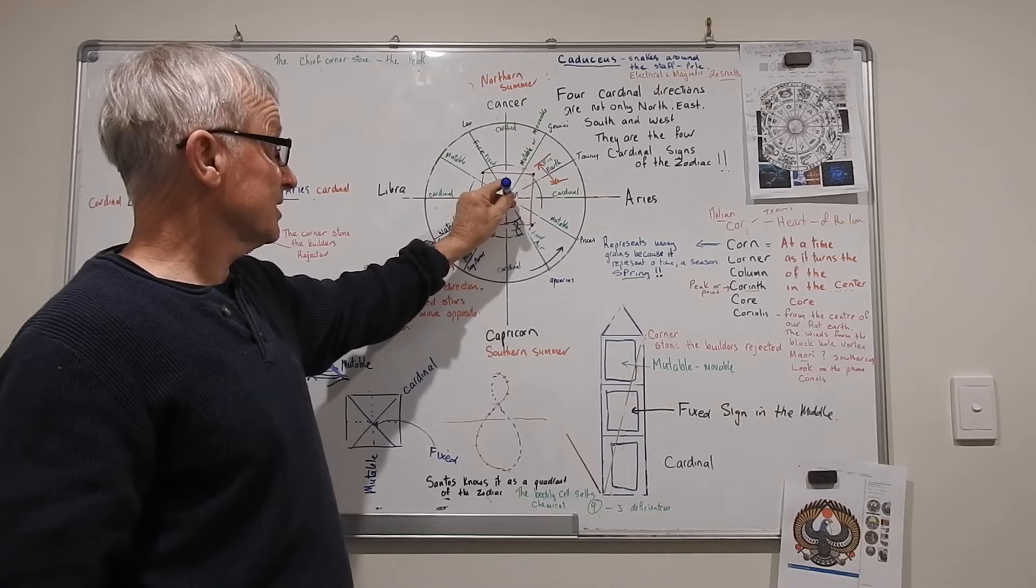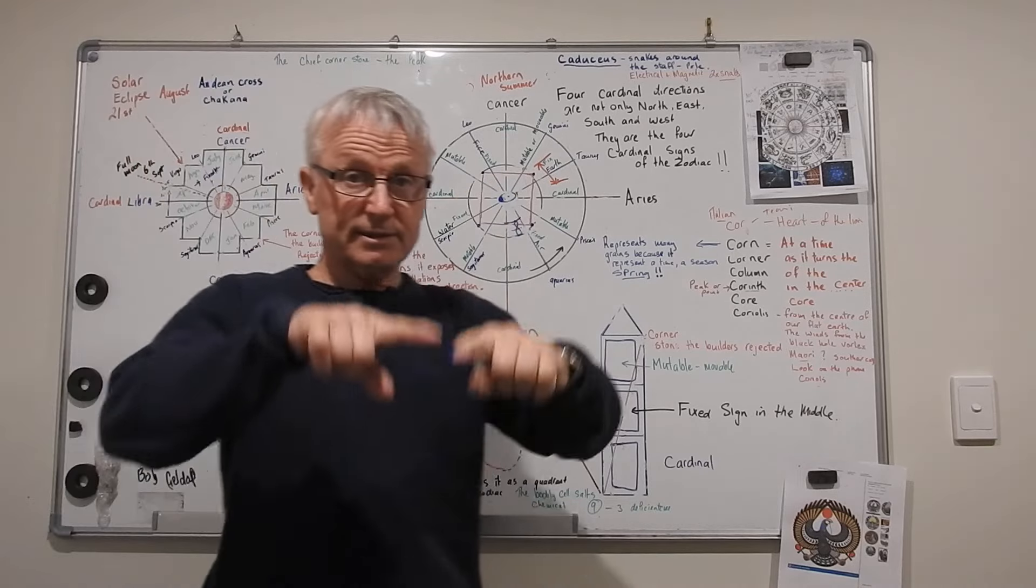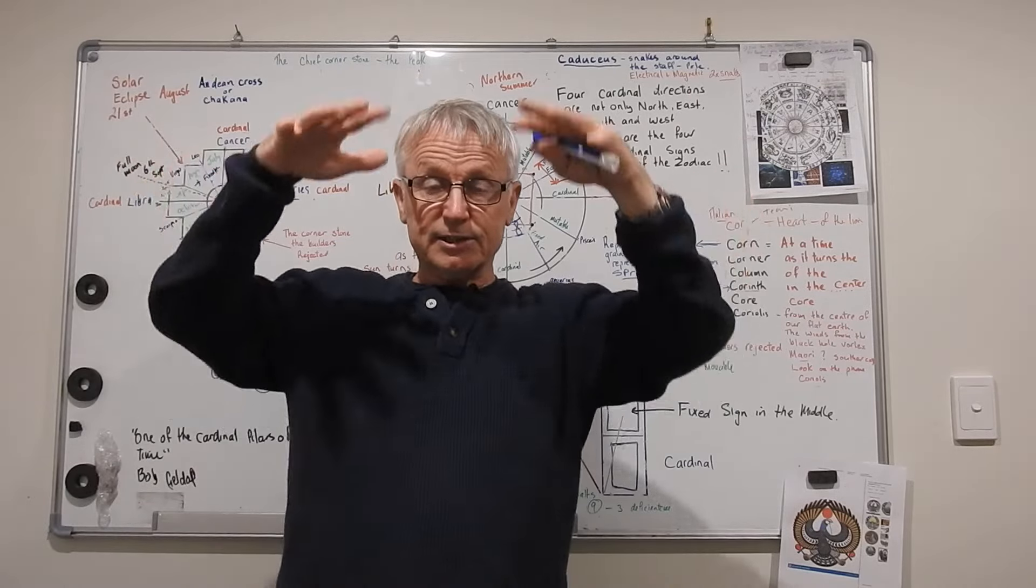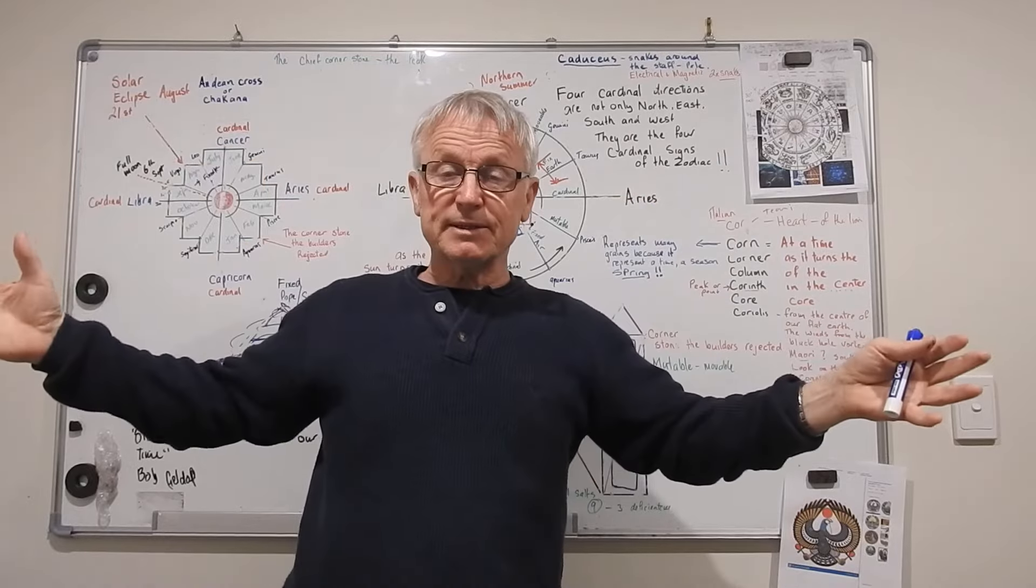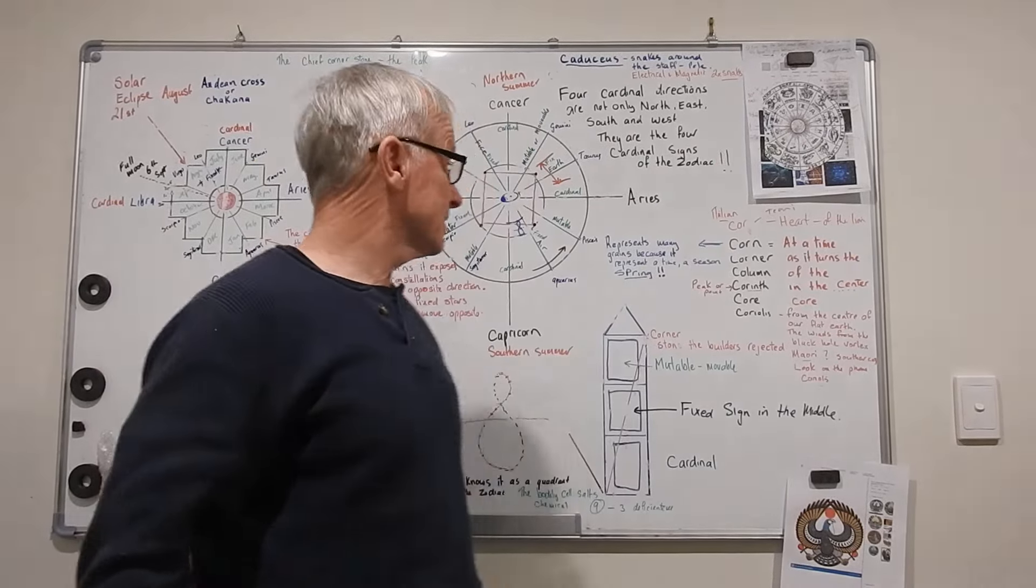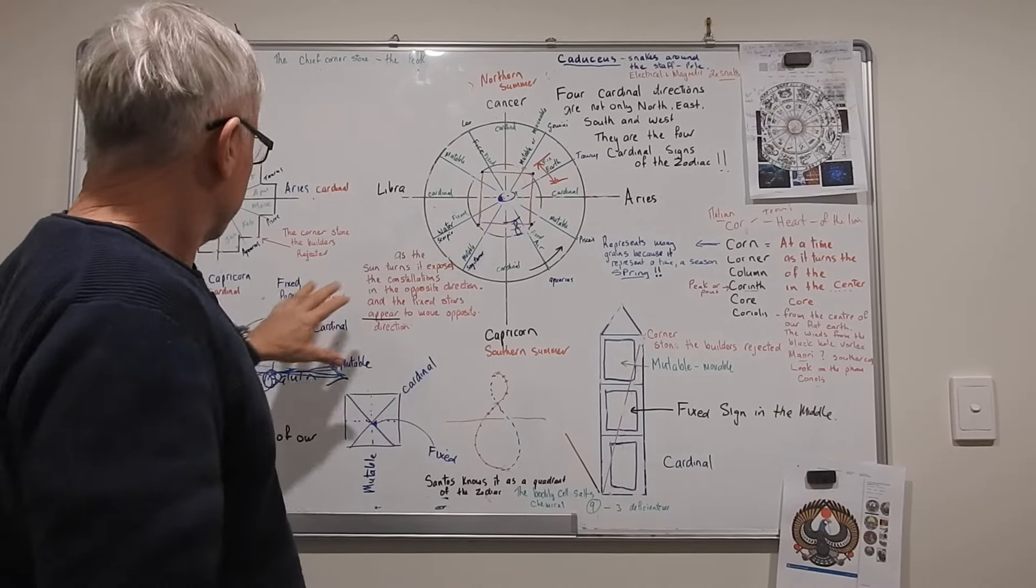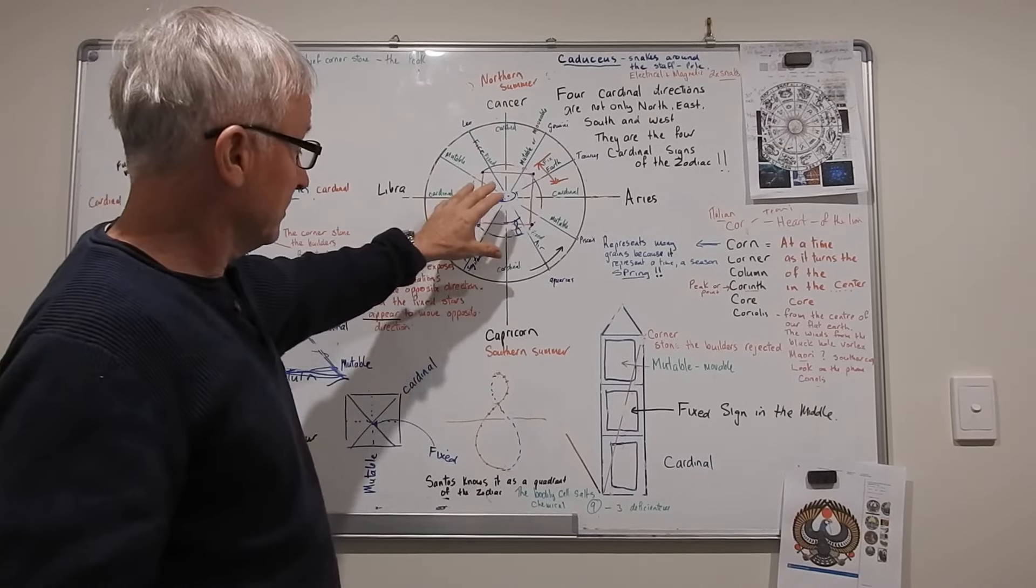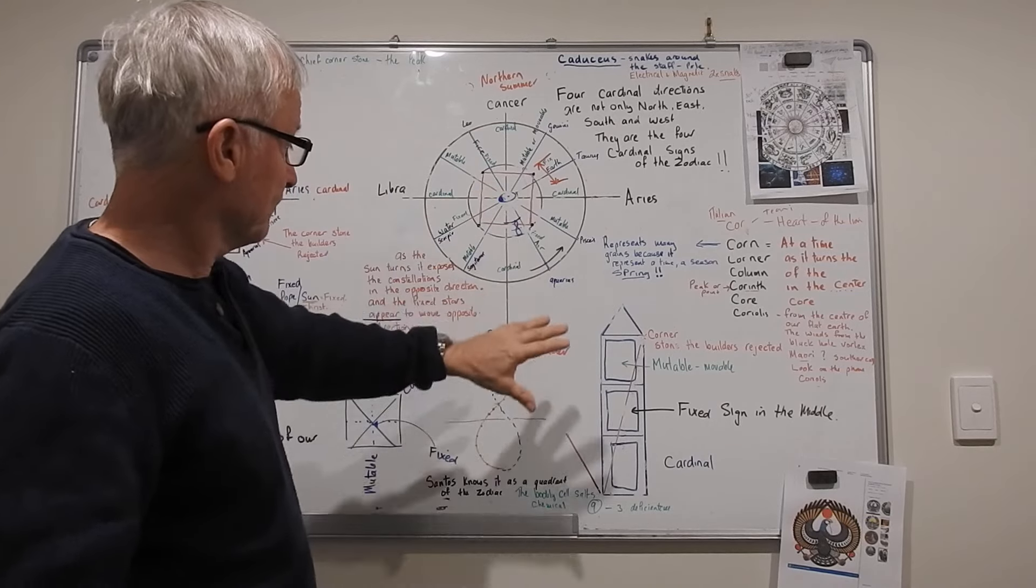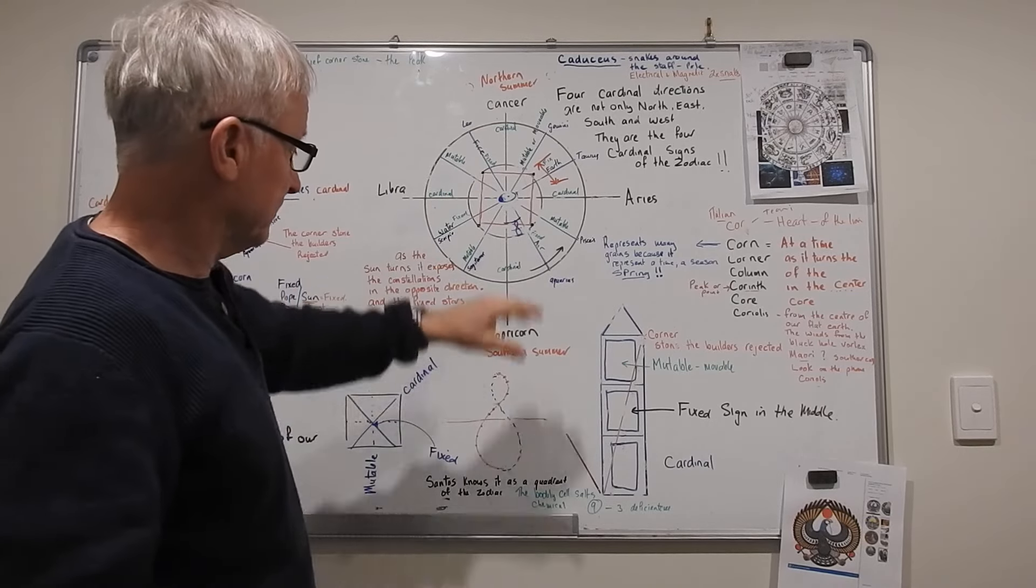But when you start realizing the shape of the earth, the center vortex, parabolic reflections, concave, moisture firmaments, science, it all adds up. It's right through all my videos. Check them out. That's what's happening. Science is total bullshit when it comes to celestial physics.